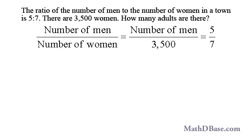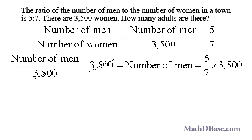We first have to find the number of men in the town. Setting up a proportion, we have the ratio of the number of men to the number of women, or the number of men to 3,500, equal to the ratio of 5 to 7.